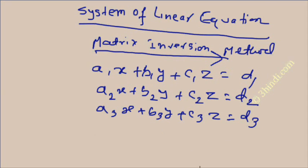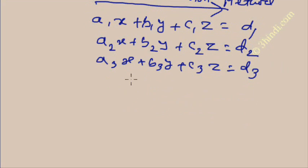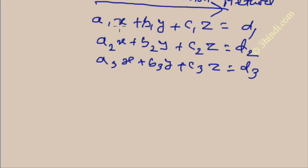In this method we will use a matrix principle. The three equations are: a1x + b1y + c1z = d1, a2x + b2y + c2z = d2, and a3x + b3y + c3z = d3. You need to solve this equation and find out the values of x, y, and z.